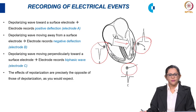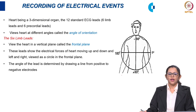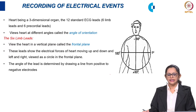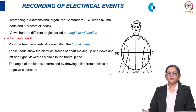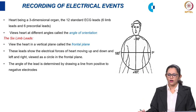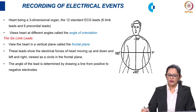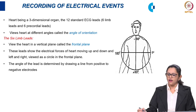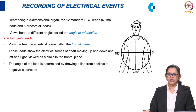The effects of repolarization are precisely the opposite of those of depolarization. Considering the heart as a three-dimensional organ, the 12 standard ECG leads — 6 limb leads and 6 precordial leads — view the heart at different angles, called the angle of orientation. The 6 limb leads view the heart in a vertical plane, called the frontal plane, showing electrical forces moving up, down, left, and right. The angle of these leads is determined by drawing a line from positive to negative electrodes. These principles are very important in understanding the vectorial analysis of ECG.